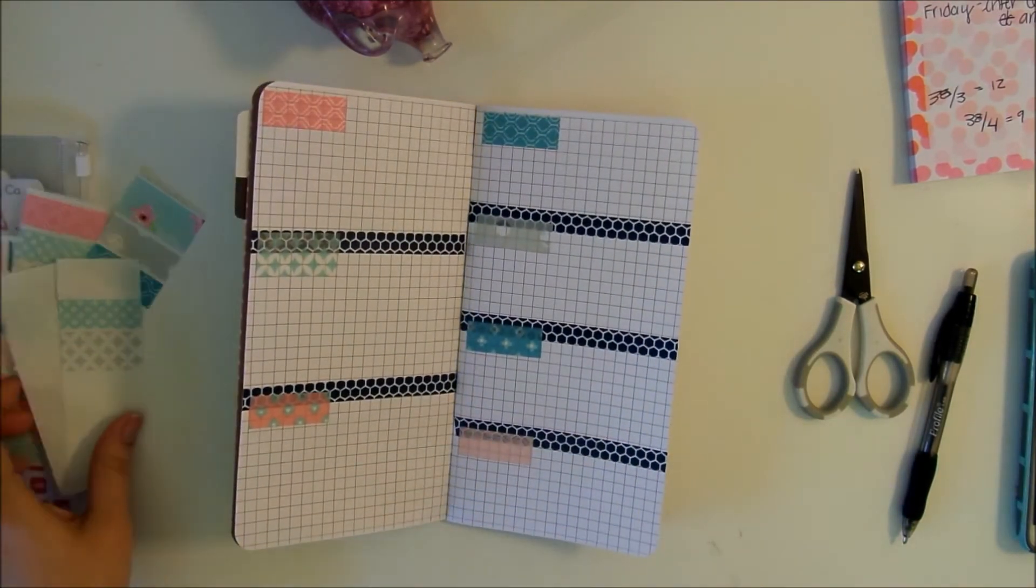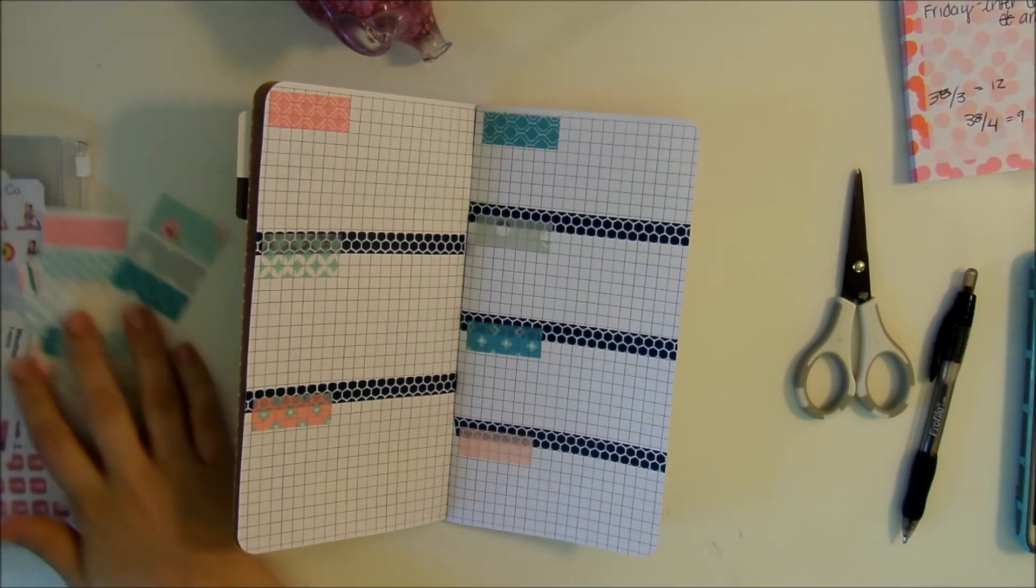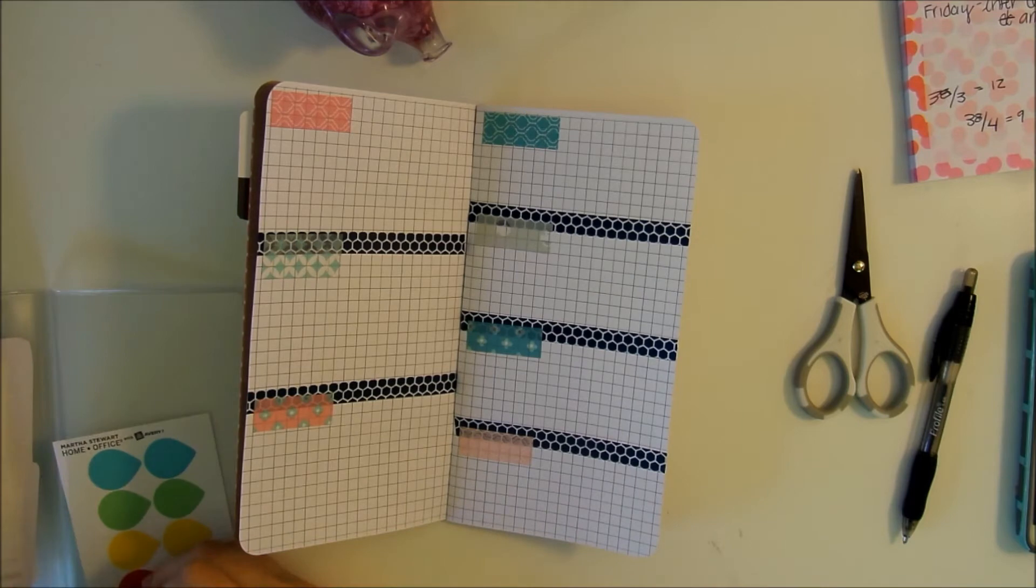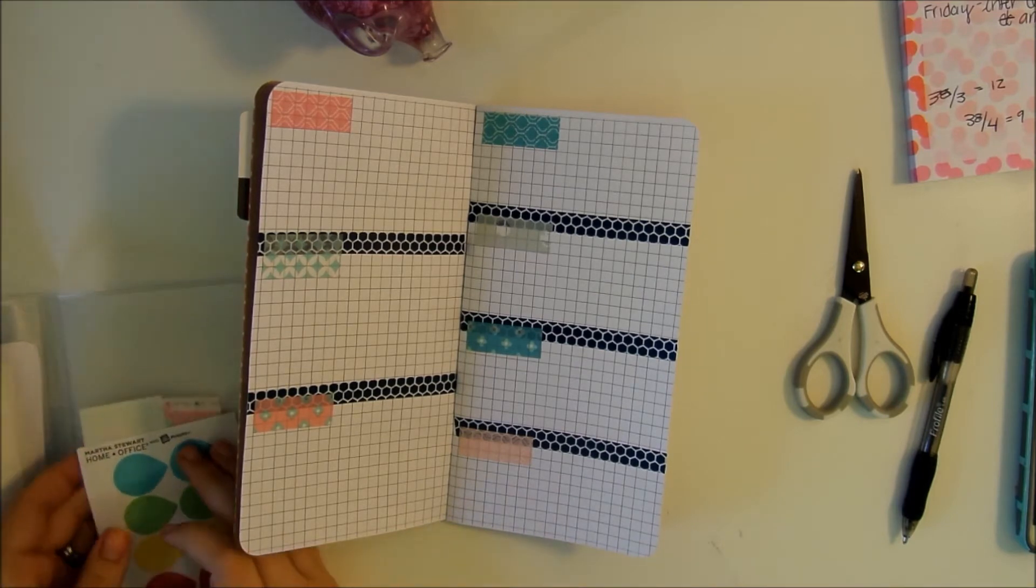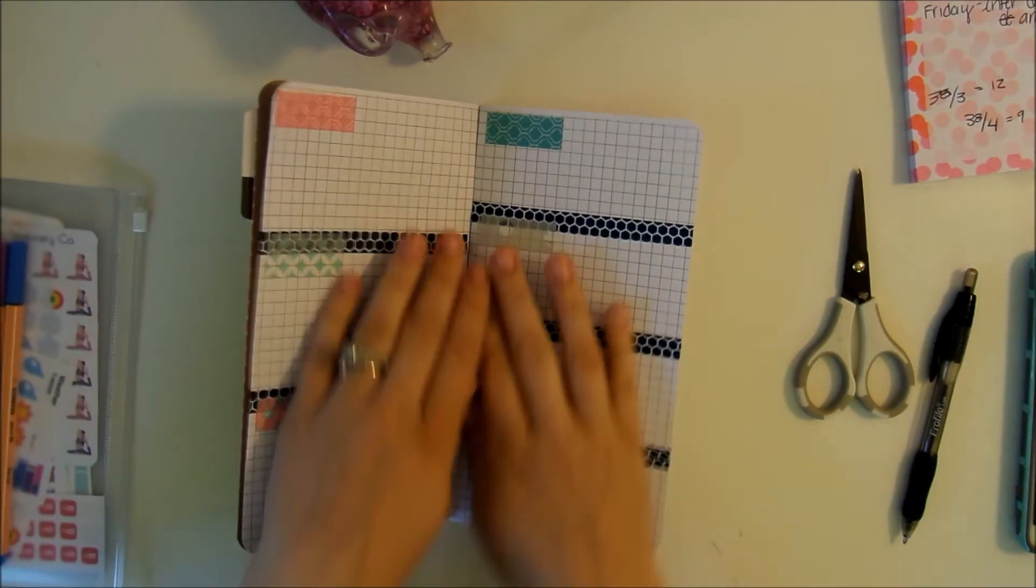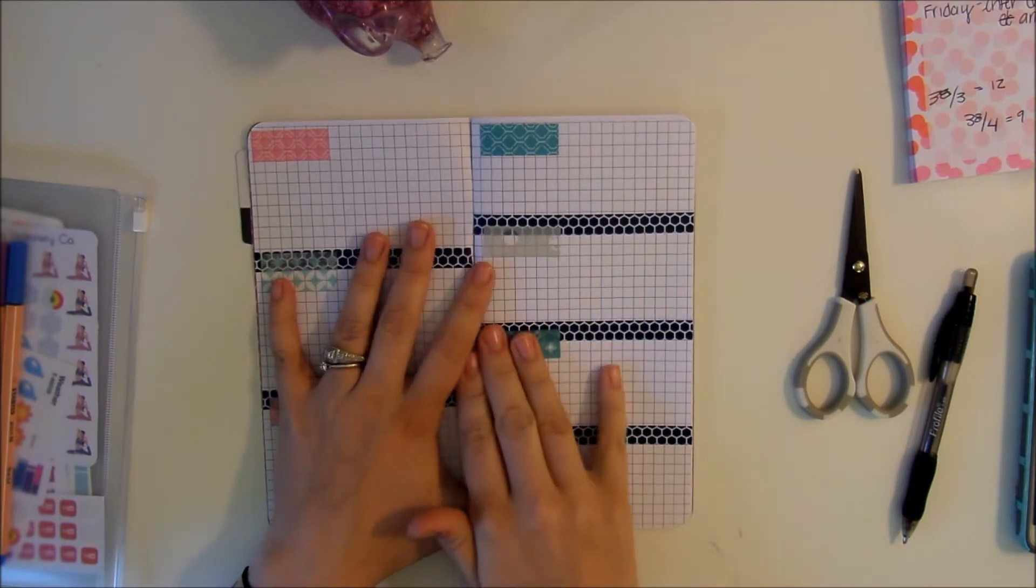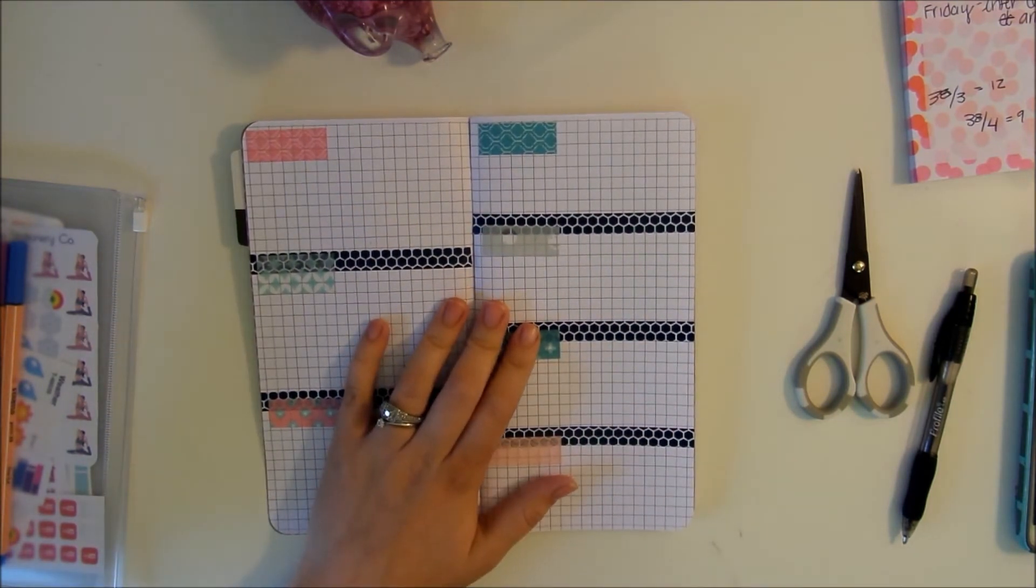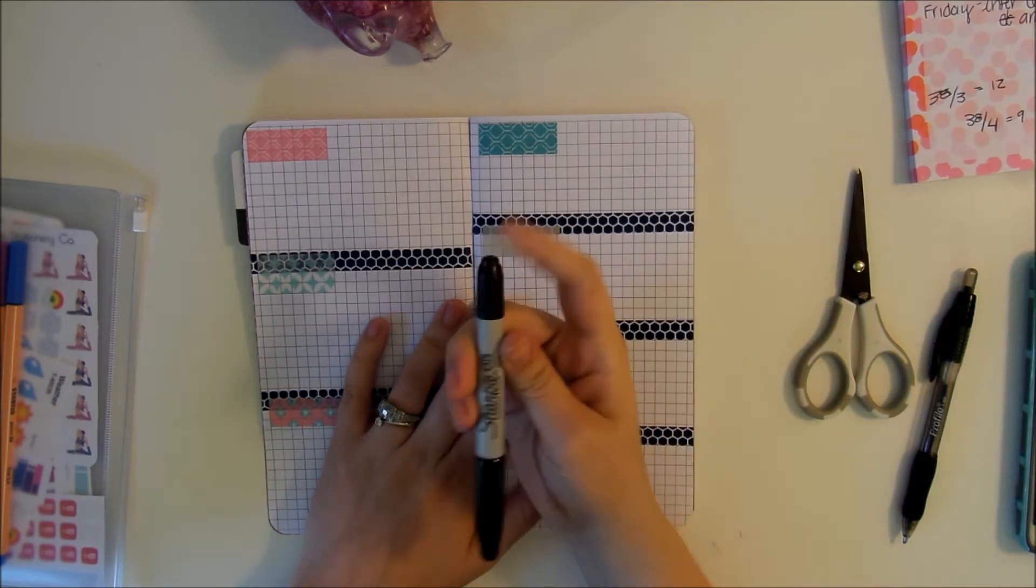I did not put these on in any particular order, I just like the way that this will turn out because it'll be very pink and blue and I really like those colors. Now I'm going to go through and write the day on each piece of washi tape with a sharpie marker, and I'm going to use the ultra fine side.